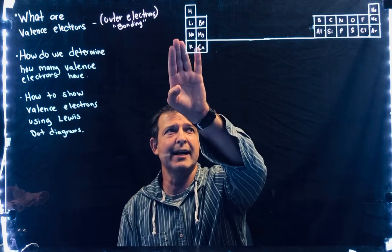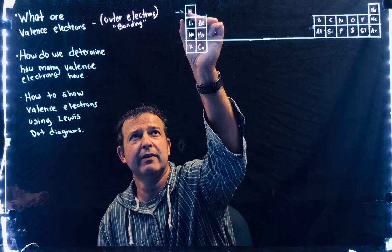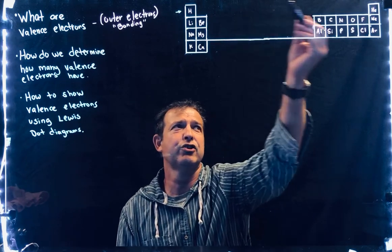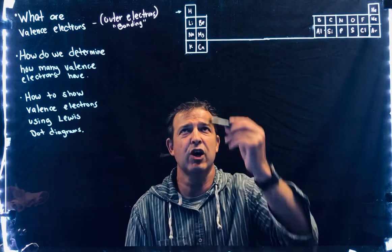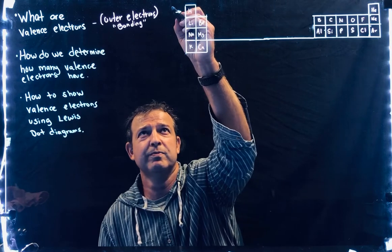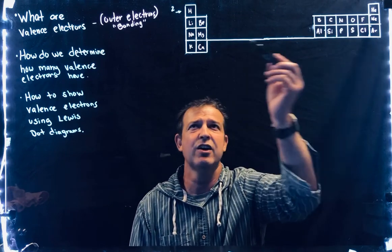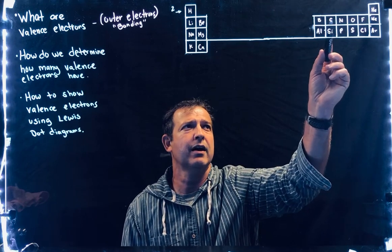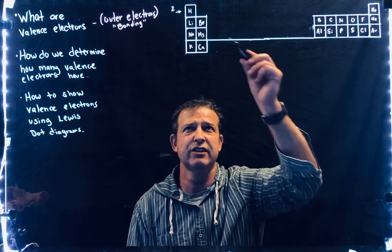I look at the periodic table in rows. This would be the first row here, and it only has two elements in that row, so this row can hold two. The next one, starting with lithium and going to neon, holds eight. You can count it out: lithium one, beryllium two, boron three, carbon four, nitrogen five, oxygen six, fluorine seven, and then neon eight. So we can have eight.